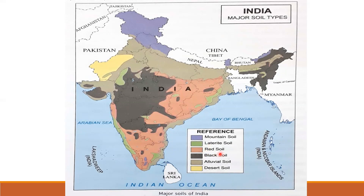The next one is black soil. Black soil is shown using black color. Black soil is found in Madhya Pradesh, Maharashtra, and in the northeastern states of Arunachal Pradesh, Nagaland, Manipur, Mizoram, Tripura, and Meghalaya, and also in some parts of Gujarat, Karnataka, Telangana, and Andhra Pradesh.